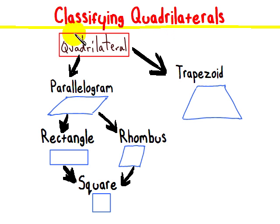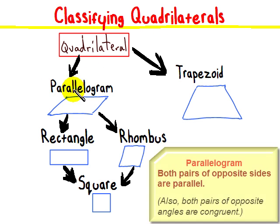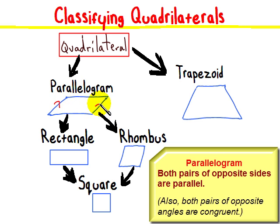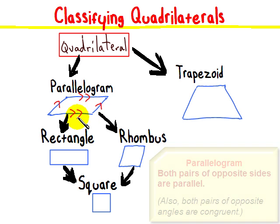So first of all, quadrilaterals can be parallelograms. A parallelogram is when you have both pairs of opposite sides that are parallel. So this side is parallel to that side, and then this side is parallel to that side.